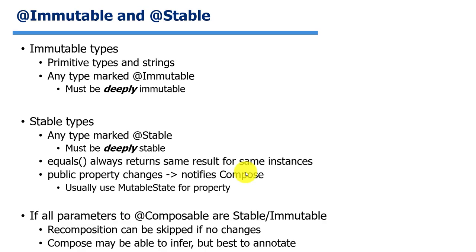When you pass data into a function, Compose can sometimes figure out if those values are changeable. If you're passing in a string or an integer, Compose knows those are immutable types, so if only those are passed in, the function doesn't need to be recomposed if the values haven't changed. For custom types, you want to aim for types that are either immutable or stable — preferably immutable. Immutable means the type cannot change, and it should be deeply immutable: if a person object has an address, the address should be immutable too, and anything reachable from it cannot change.